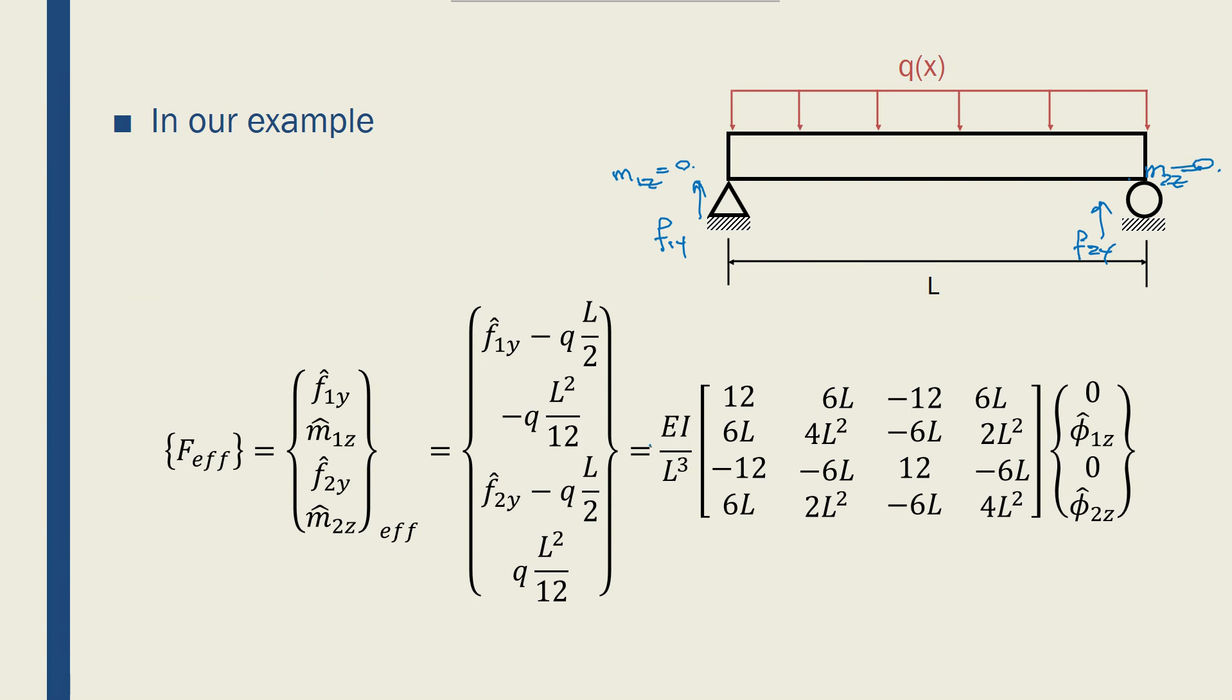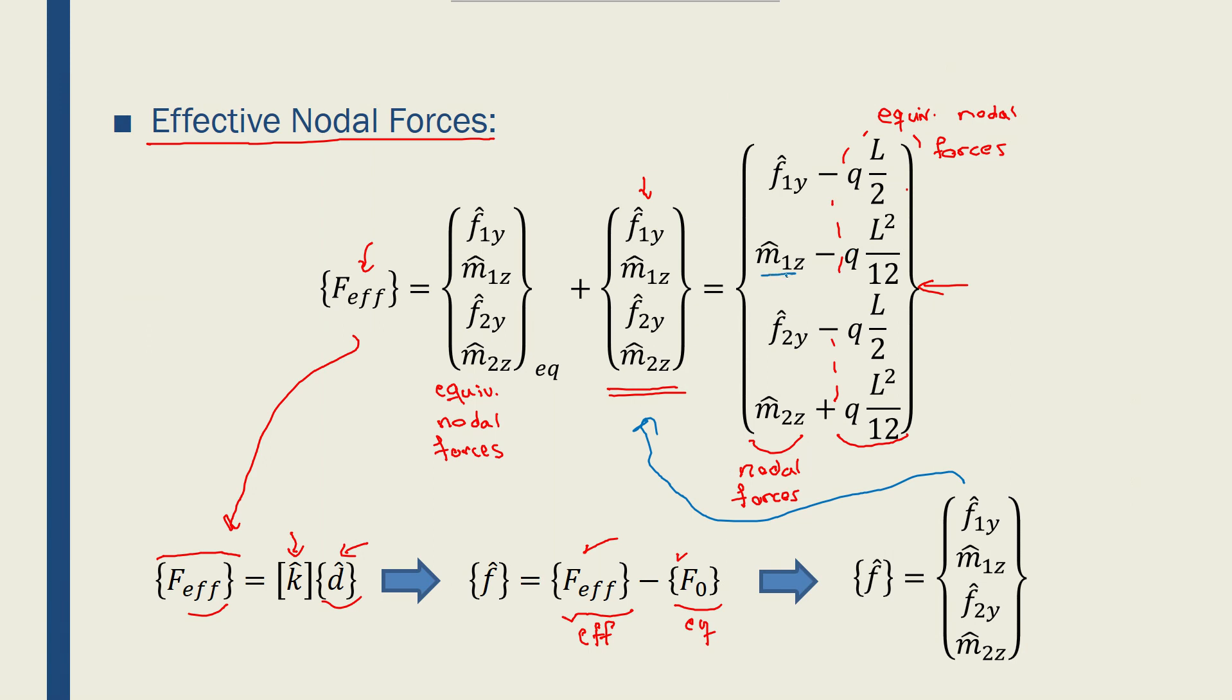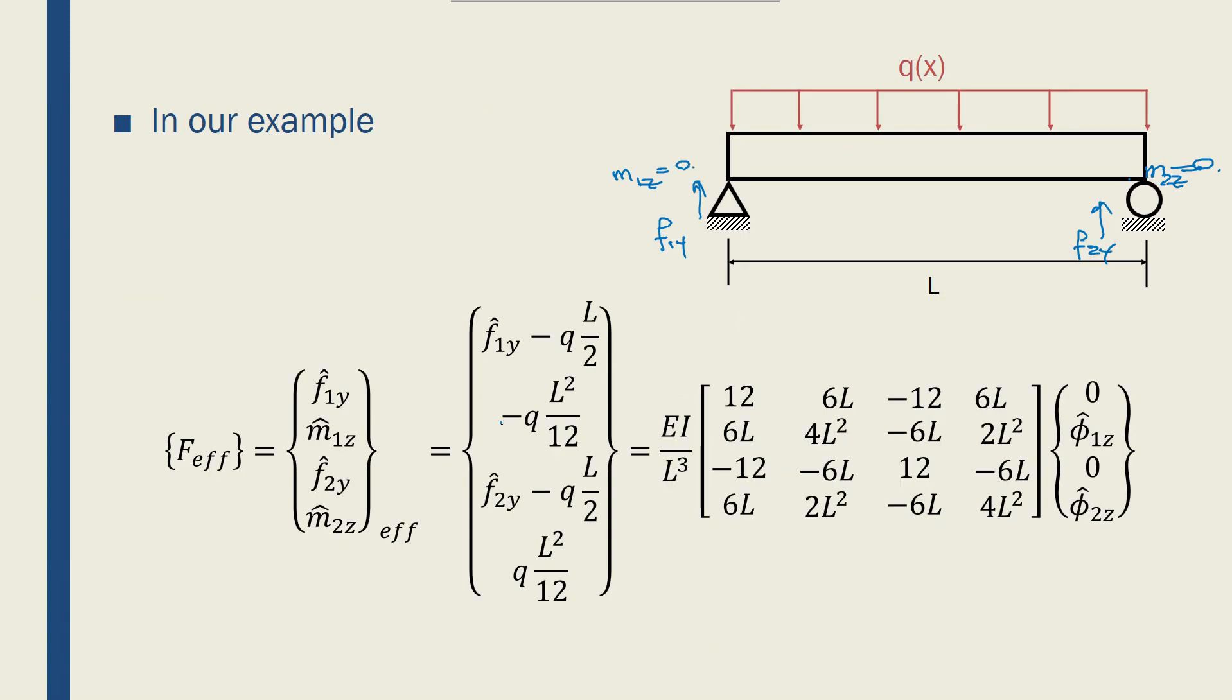But m1z is equal to 0 and m2z is equal to 0. And if I look back again, m1z and m2z are shown there on the second and fourth elements of this vector, which I've put 0 here and 0 plus in here because I don't have them. But f1y and f2y are the unknowns of my equation.